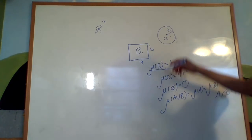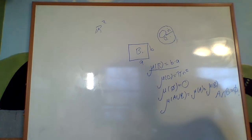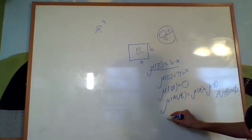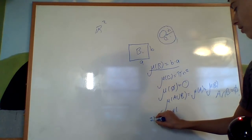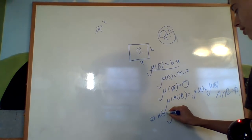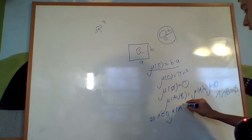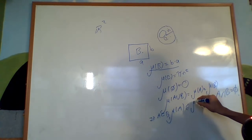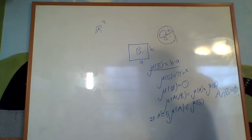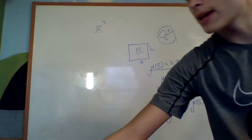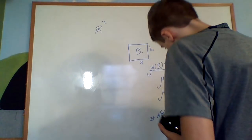Now another thing you'd expect is that if I had a subset of this circle, it'd have a smaller measure. So if A is a subset of B, then mu of A is less than or equal to mu of B. And this is how we base our measures — on these facts.